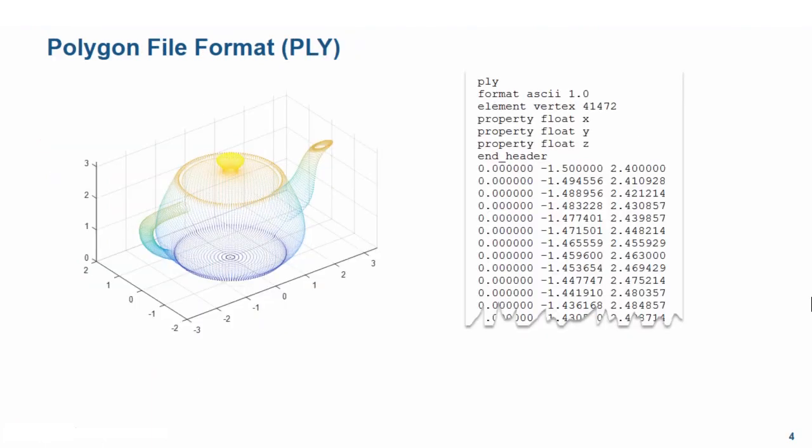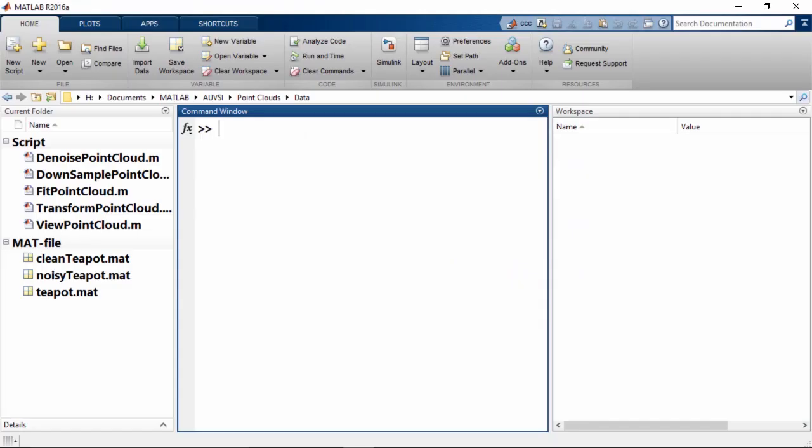The 3-dimensional data from 3D scanners is stored in the polygon or PLY file format, also known as the Stanford triangle format. Each vertex or point is stored as an individual line in the PLY file. For the example of the teapot, there are 41,472 vertices or data points stored in the PLY file. Let's switch to MATLAB to see how we can read in PLY files.